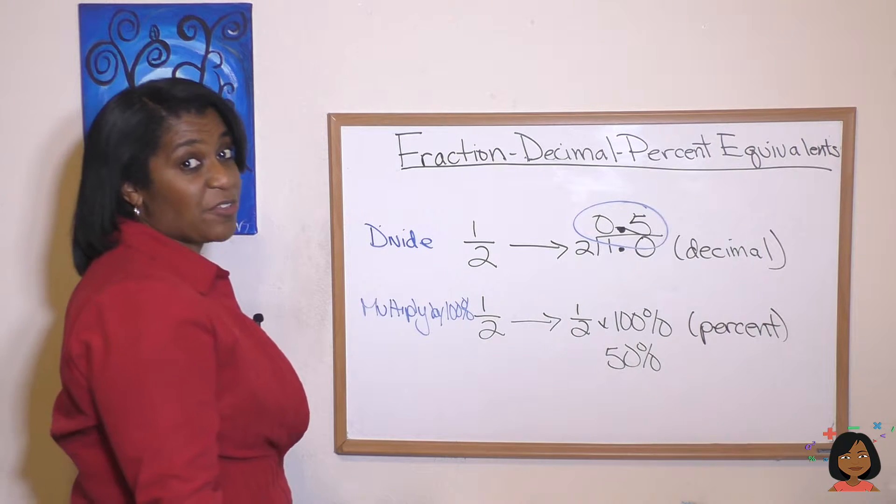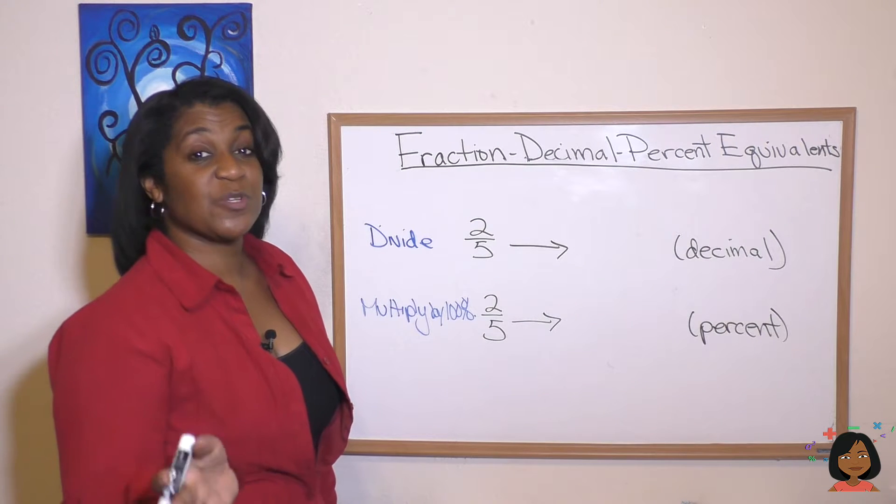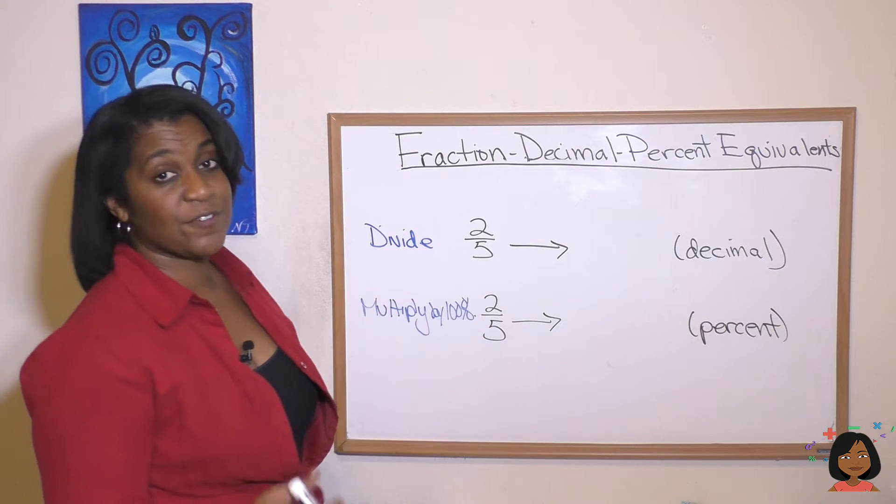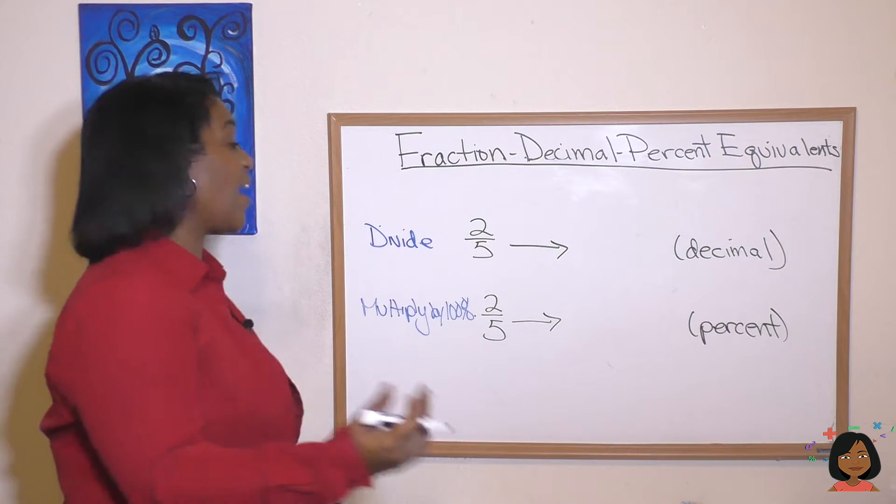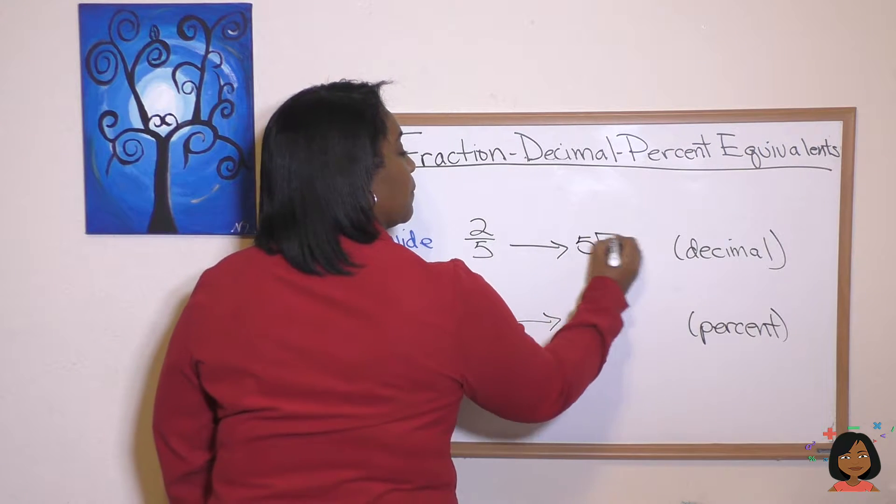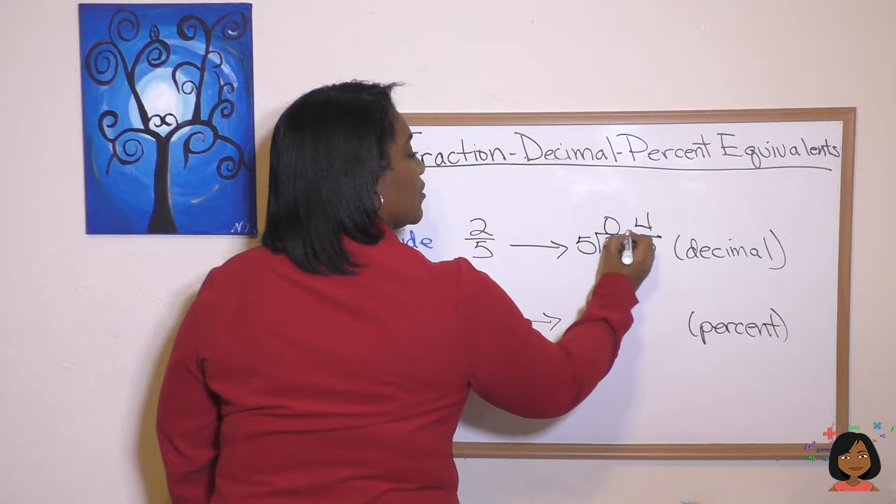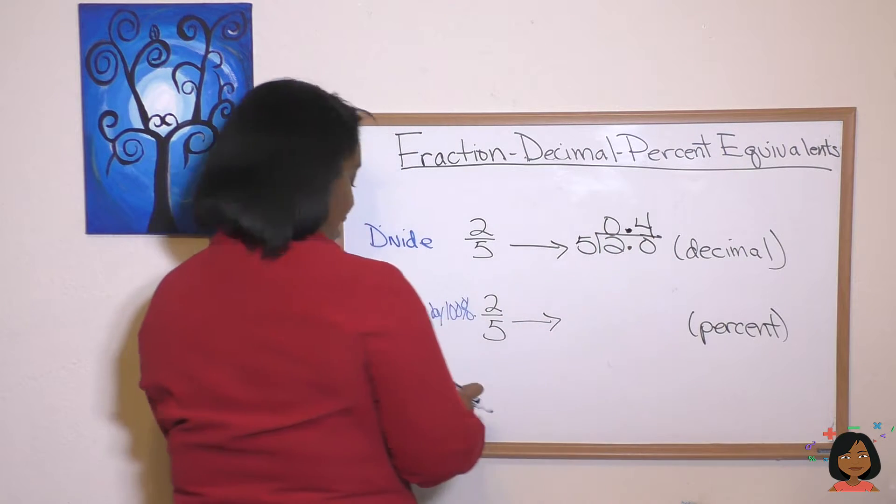Okay let's try it with another fraction. This time let's use the fraction two-fifths. So to get from two-fifths to a decimal we divide. So let's do it. And that gives us 0.4. That's our decimal.